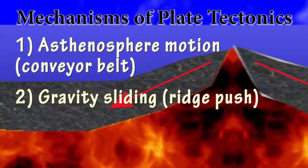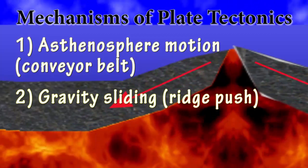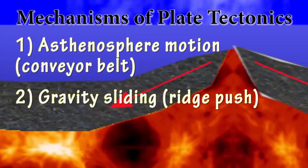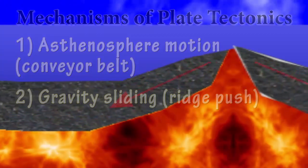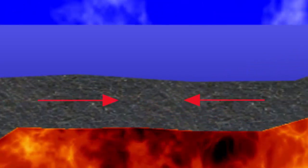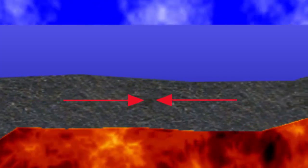Ridge push actually has one other component, which is that cooling and contracting of the lithosphere as it draws away from the ridge, which causes a little bit more tension on the ridge, pulling it apart.